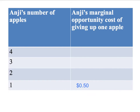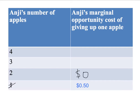Now let's imagine that Anji's given up that first apple — she's now got three apples left, and we ask her a new question. Hey Anji, what is the minimum amount you'd be willing to accept to give up just one more apple, given that you've now only got three apples left? Given you've already given up one apple and you're down to three apples, what is the minimum amount we'd have to pay you to convince you to give up one more apple? Let's imagine that Anji's answer is 80 cents. That's Anji's marginal opportunity cost of giving up that second apple, given she's already given up one apple.